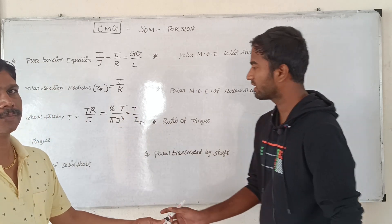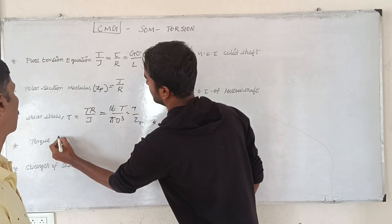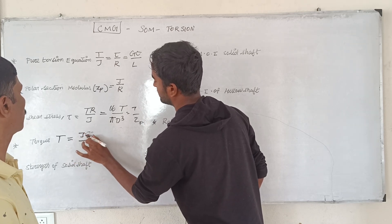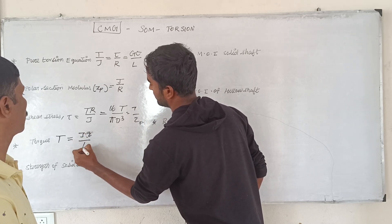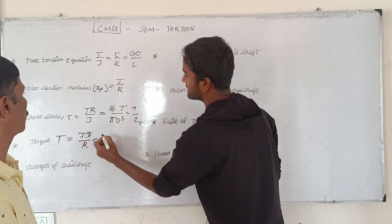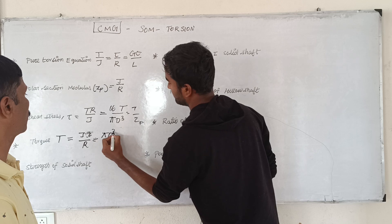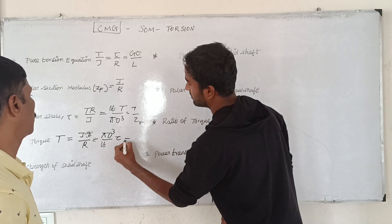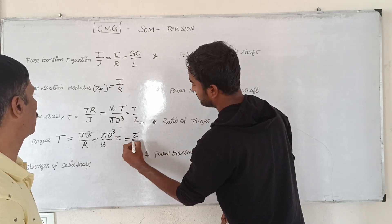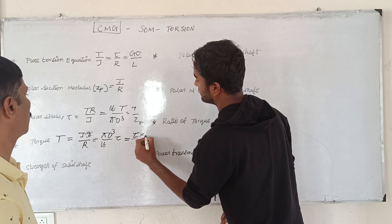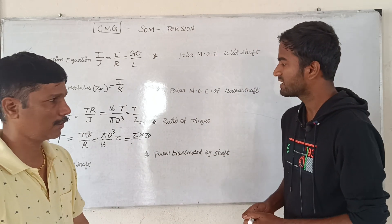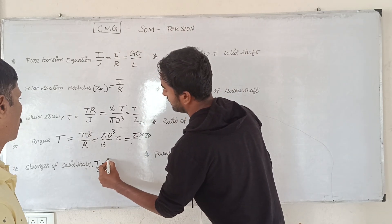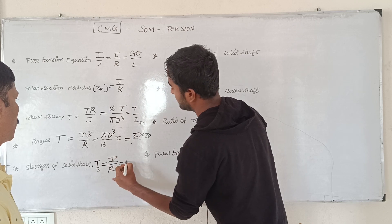That is the torque. We use the torque equation. If we use the torque, we use T by R. If we use J by R, we get Pi·D³ by 16. We write it as T by ZP. That is the strength of the solid shaft. This is the formula: T equals Tau times ZP.